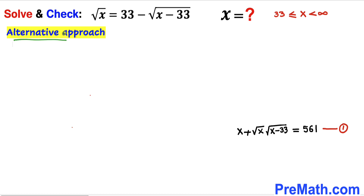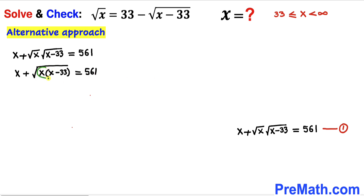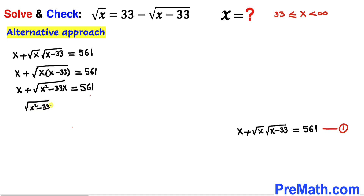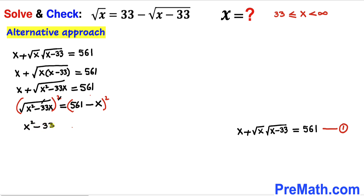Now let's look at the alternative method. Returning to equation number one: x + √x · √(x−33) = 561. We multiply the radicals under one root to get √(x(x−33)) = √(x²−33x). Moving x to the other side gives √(x²−33x) = 561 − x. Now I square both sides so the square root and square cancel on the left. Let's recall the identity (a − b)² = a² + b² − 2ab, which we apply to the right hand side binomial (561 − x)².